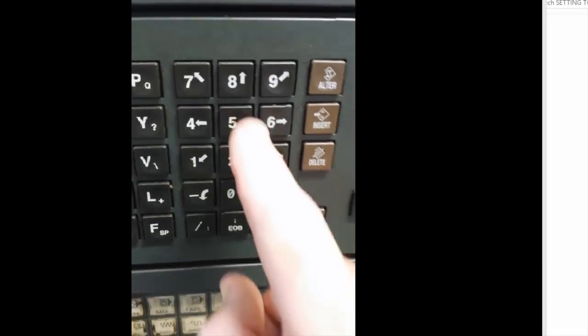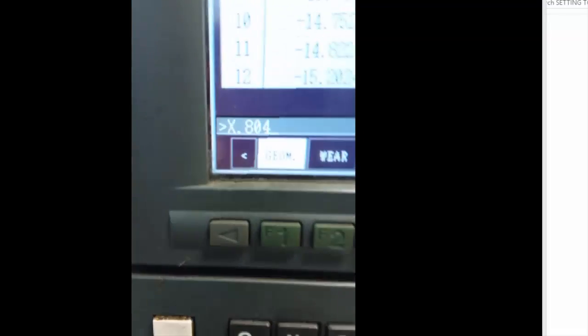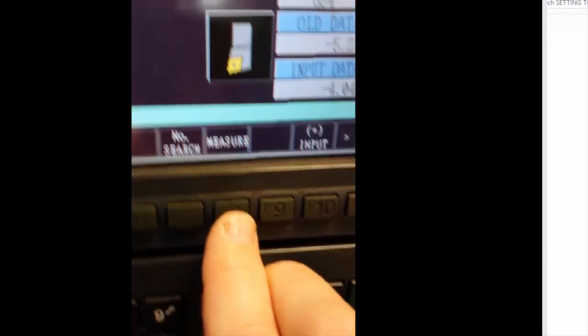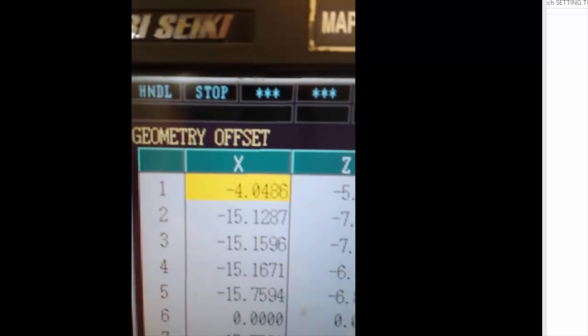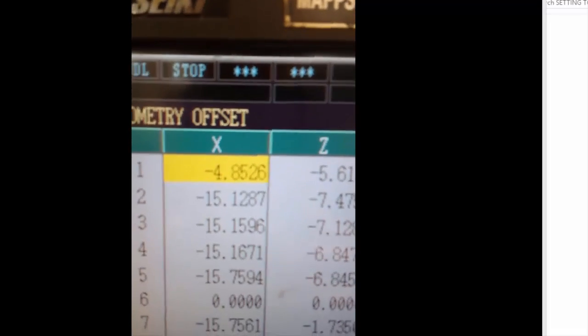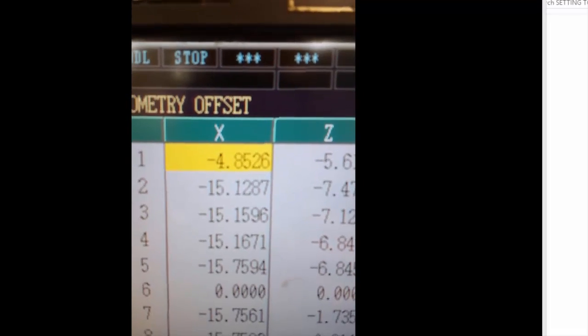.804, and we're going to select Measure. So now it's going to update the X axis, and now the machine knows that the tool tip is sitting at .804.